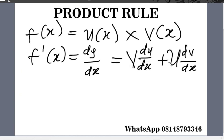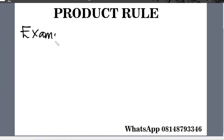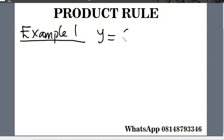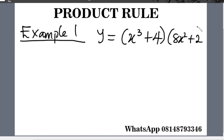Now let's take an example for better understanding. Example 1: if y equals (x cubed plus 4) multiplied by (8x squared plus 2), find dy over dx.